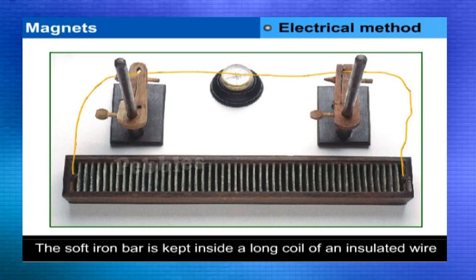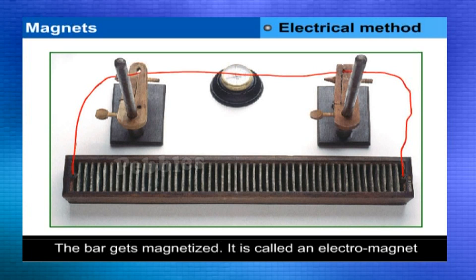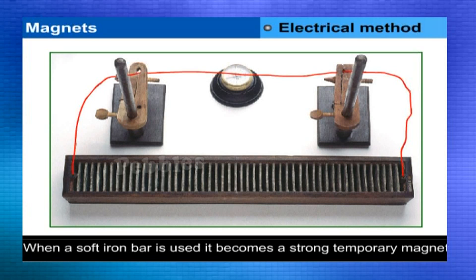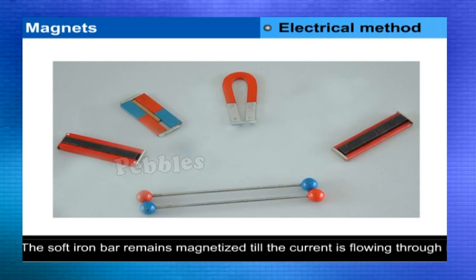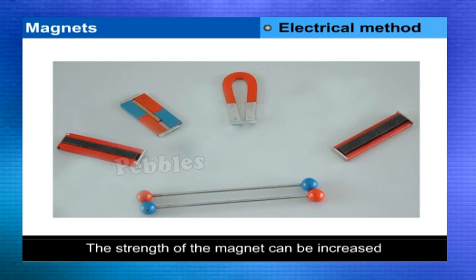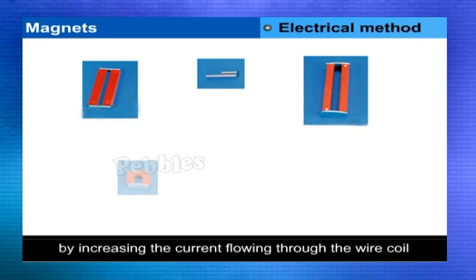In the electrical method, a soft iron bar to be magnetized is kept inside a long coil of insulated wire. When a powerful electric current is passed through the coil, the bar gets magnetized — this is called an electromagnet, and the phenomenon is called electromagnetism. If a steel bar is used, it becomes a permanent magnet; if a soft iron bar is used, it becomes a very strong temporary magnet that loses its magnetism when the current is switched off. The strength can be increased by increasing the current. Magnetic keepers are pieces of soft iron placed between opposite poles of pairs of bar magnets or horseshoe magnets.